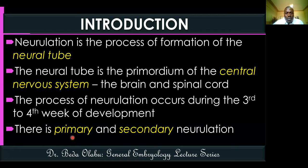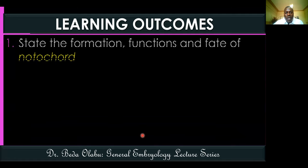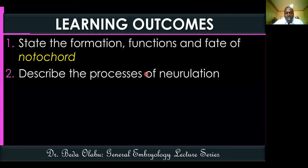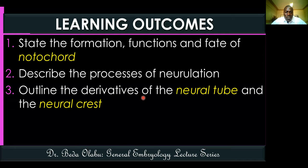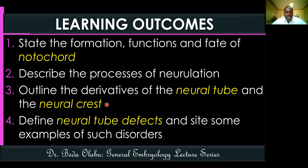There are two types of neurulation: primary neurulation and secondary neurulation. In this lecture, we'll look at how the notochord forms, its functions and fate. We'll then discuss both types of neurulation, the derivatives of the neural tube and neural crest, and finally neural tube defects - defining what they are and giving examples.